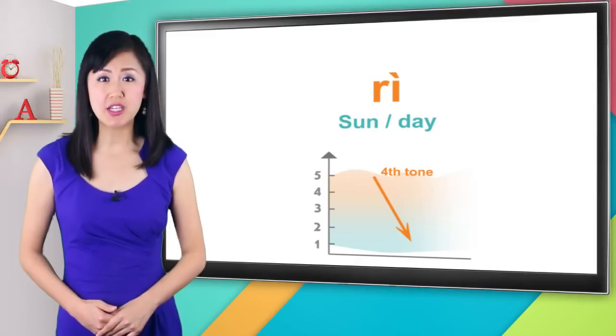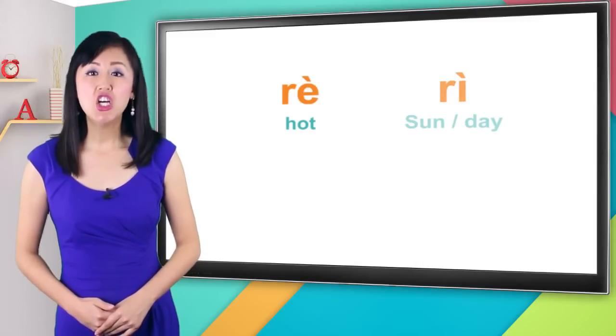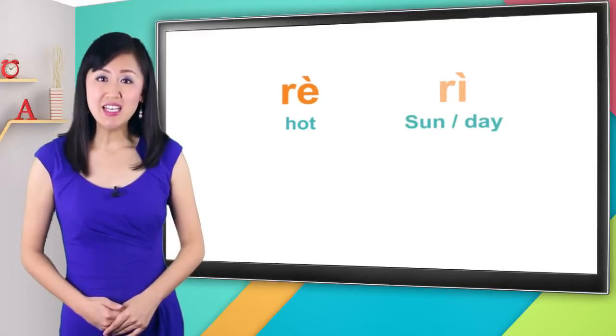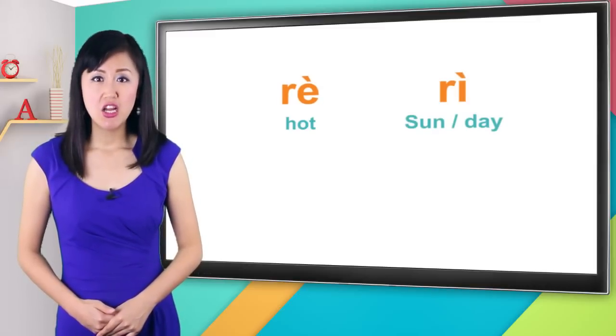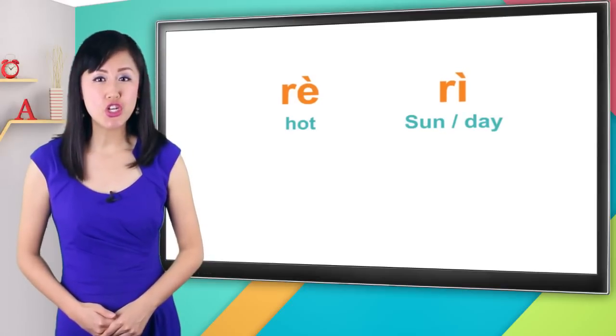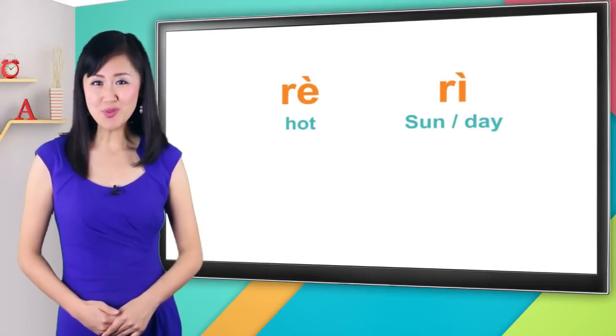Now let's compare these two words. Hot is rè, with an e sound. And sun is rì. Together: rè, rì, rè, rì. Got it? I hope so.